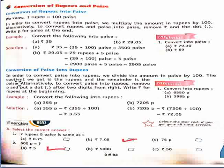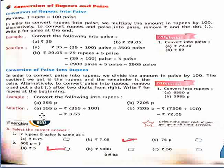Conversion of paise into rupees: uske liye hum paise ko hundred se divide kar denge. Jo quotient aayega wo rupees honge, aur jo remainder aayega wo paise honge. Convert paise into rupees — remove P, and put a dot after two digits from the right. Example part a: 355 paise. 355 ko divide karenge — quotient 3 aayega jo rupees hain, aur remainder 55 paise. So hum likhenge rupees 3.55.